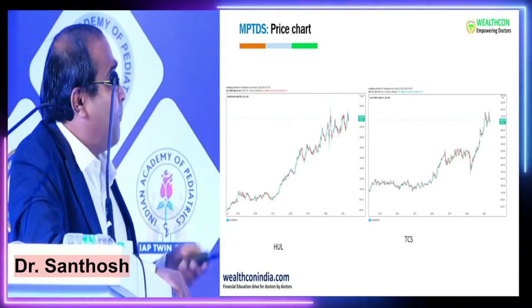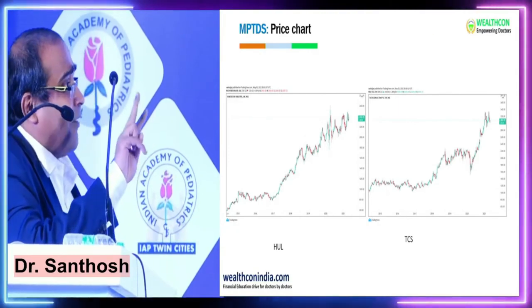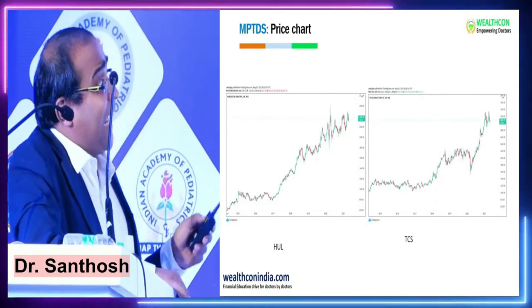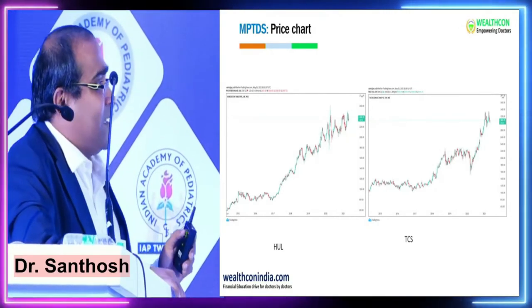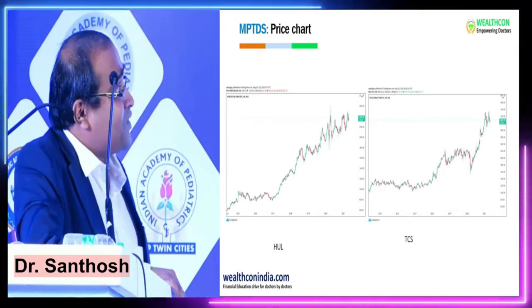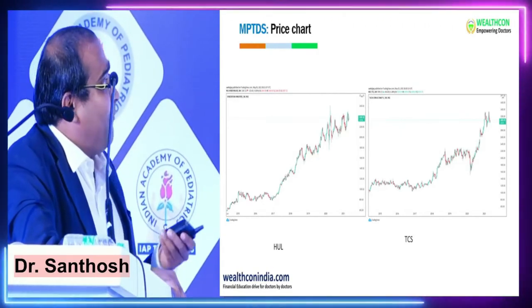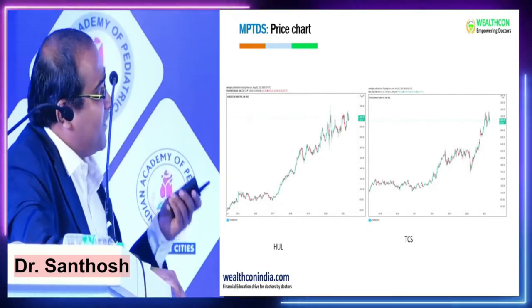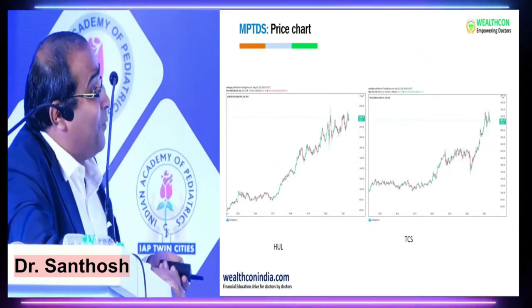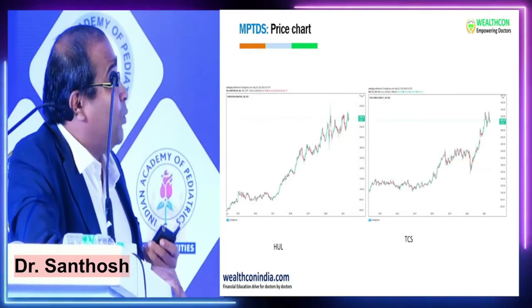You can have Marico or similar companies in your portfolio. For IT sector, you can have TCS or Infosys. At WealthCon, we don't give tips — we don't give fish, we teach how to catch the fish. If you give fish, it lasts only one week or one month. But if you teach how to fish, it is long term. To make you Atmanirbhar, you should understand the concept and how to use it.